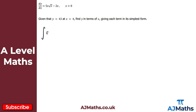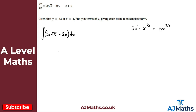We're integrating 5x root x minus 2x with respect to x. To make life easier, let's change root x to x to the power of a half. So we have 5x times x to the power of a half. Using laws of indices, we add the powers: x to the 1 plus a half gives x to the 3 over 2. So what we're actually integrating is 5x to the 3 over 2 minus 2x.